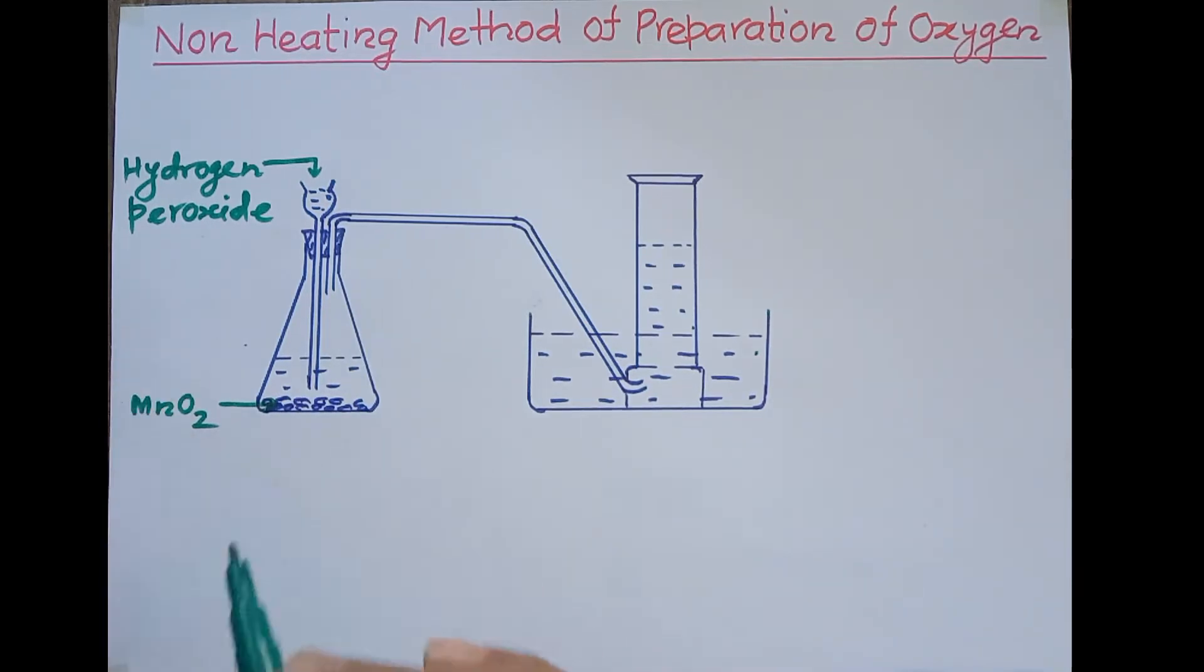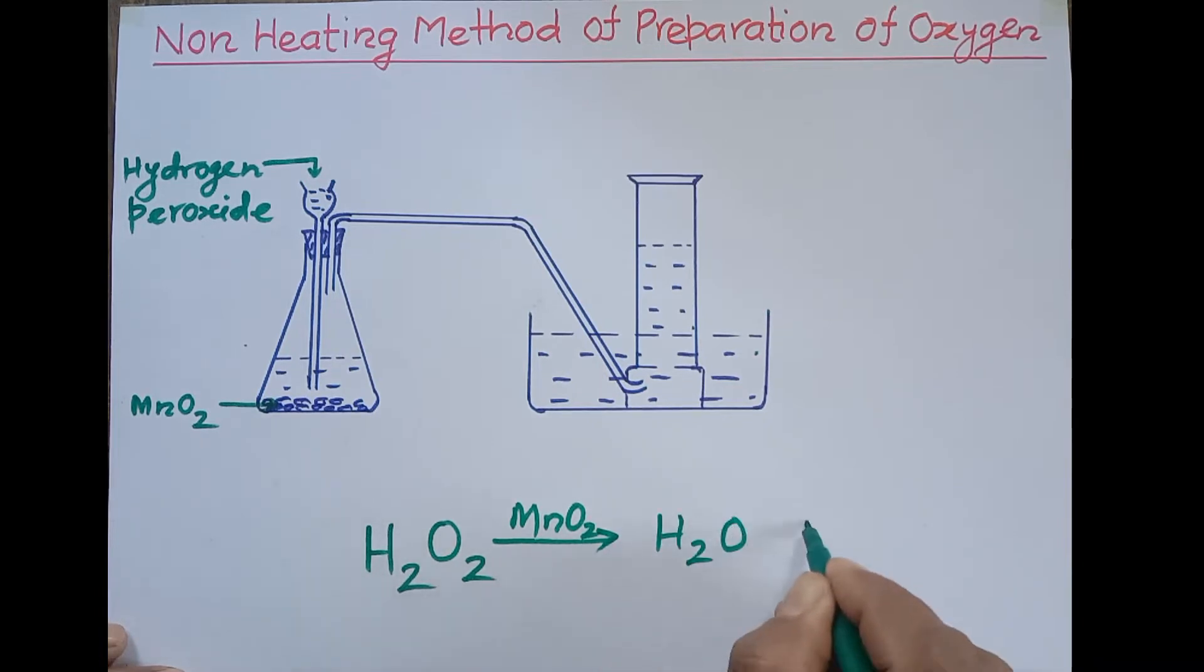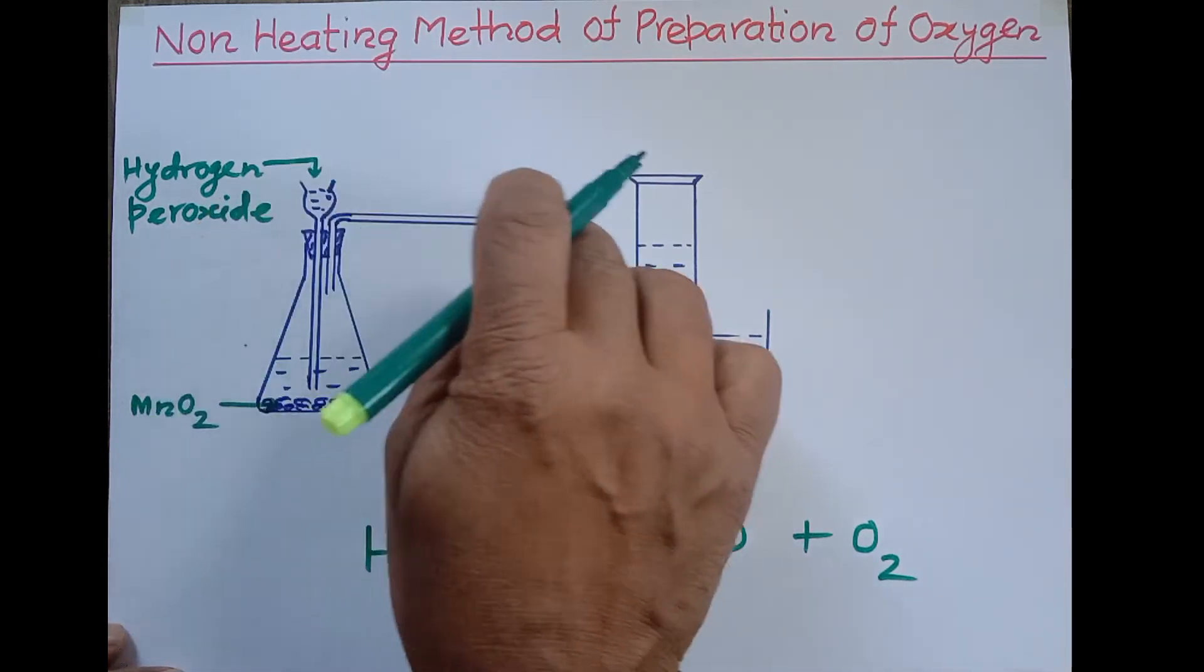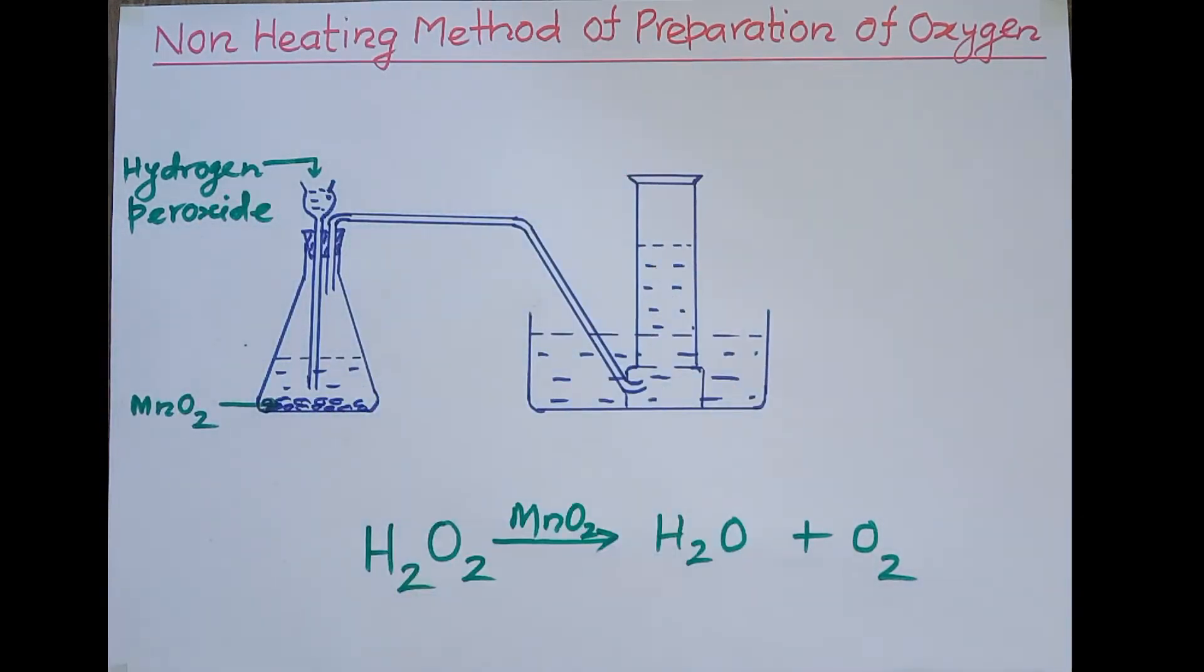When hydrogen peroxide comes in contact with manganese dioxide, it decomposes. Manganese dioxide doesn't take part in the chemical reaction, it's just the catalyst. Hydrogen peroxide decomposes this way: H2O2 with MnO2 catalyst decomposes into water and oxygen gas.